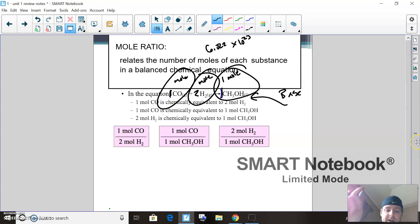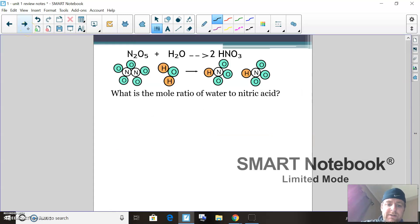Just a simple question here: what is the mole ratio of water to nitric acid? So I have one mole. When it asks you to find it, you can write it either way—one mole of H2O for every two moles of HNO3.